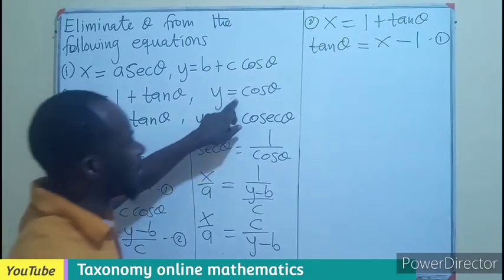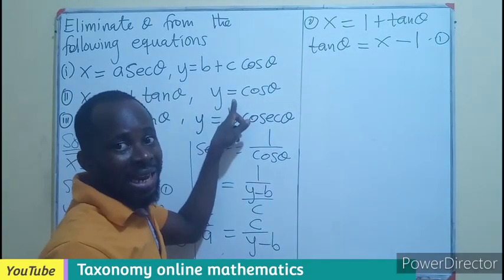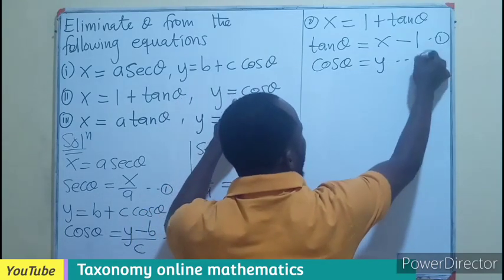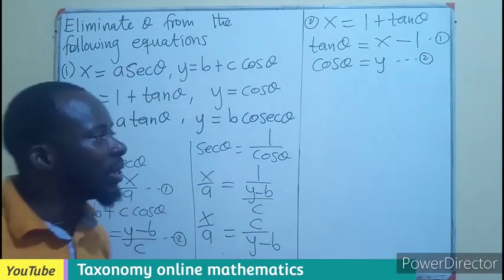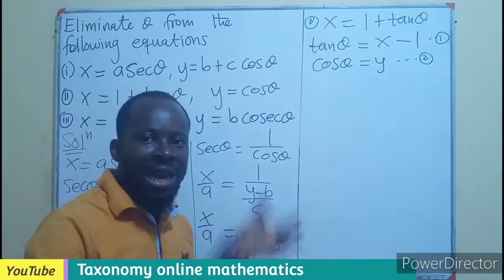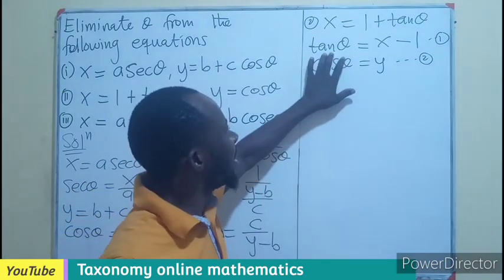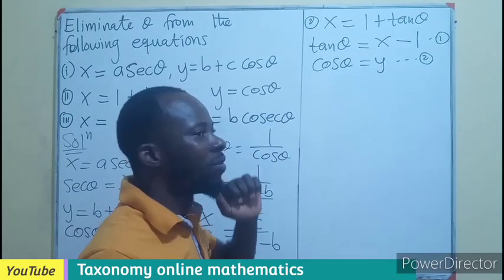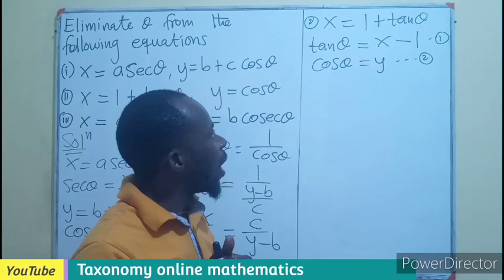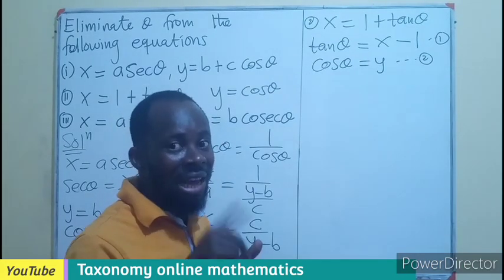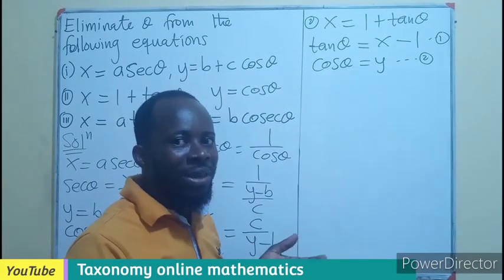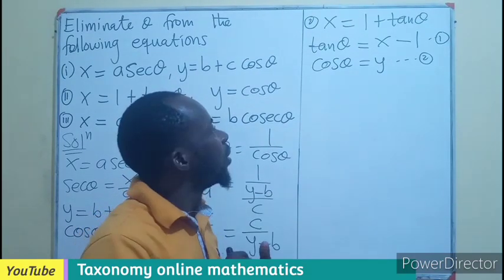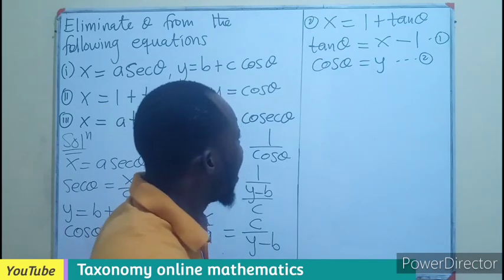Then looking at this, I am not sure there is something else to be done again because cos theta is already equals Y. So that becomes the second equation. So now our task is to see what connection we have between tan theta and cos theta in terms of trigonometry identity. I will be having tan theta equals sin theta over cos theta, which in this case, I will still be having sin theta in my expression. So we go by the identity.